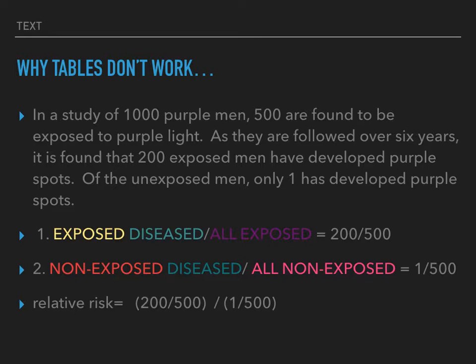For our first expression, we want to take the exposed diseased and divide it by all exposed. We are told that 200 exposed men have developed purple spots. So we have 200 people who were exposed to purple light and who have purple spots — that's our numerator. Our denominator is the 500 total who were exposed.